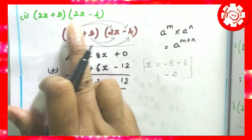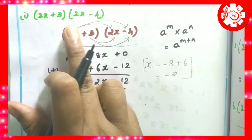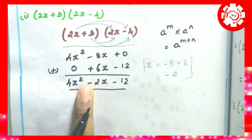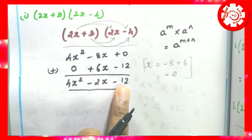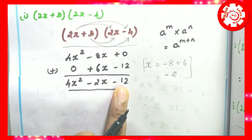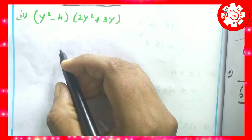So, 2x plus 3 into 2x minus 4 — the product is done. The answer is 4x squared minus 2x minus 12.